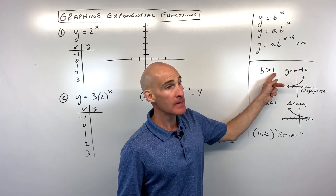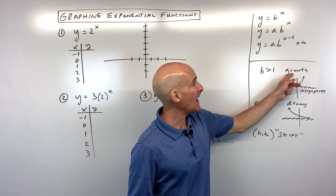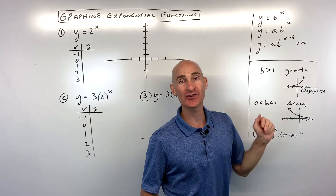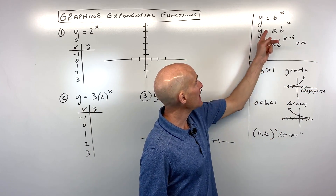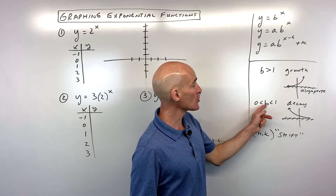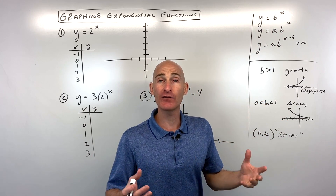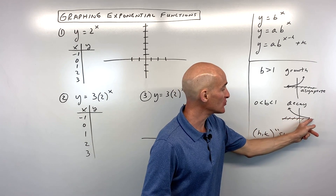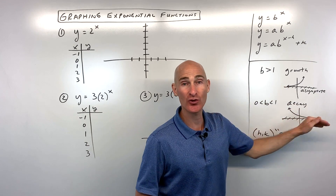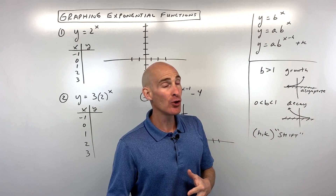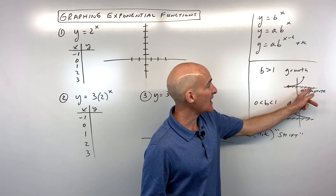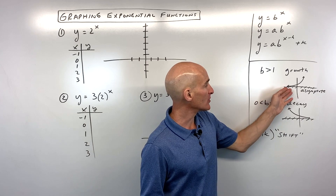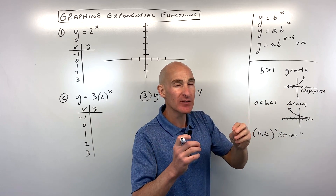If the base is greater than one, it's going to be exponential growth — as you go to the right, the graph is growing, going up. If the base is between zero and one, like a half or a third or a fourth, it's exponential decay, decreasing as you go to the right. It'll get closer and closer to this dashed line, which we call an asymptote — getting closer but never touching, never crossing.